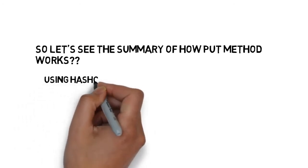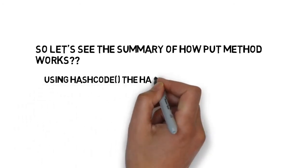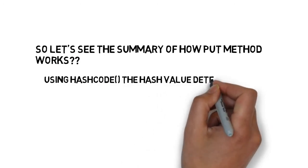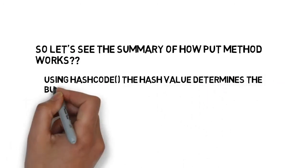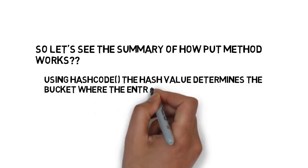So let us see the summary of how put method works. Using hash code, the hash value determines the bucket where the entry object is to be stored.